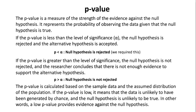P-value less than alpha: null hypothesis is rejected. If the p-value is greater than the level of significance, the null hypothesis is not rejected and the researcher concludes that there is not enough evidence to support the alternative hypothesis. P-value greater than alpha: null hypothesis is not rejected.